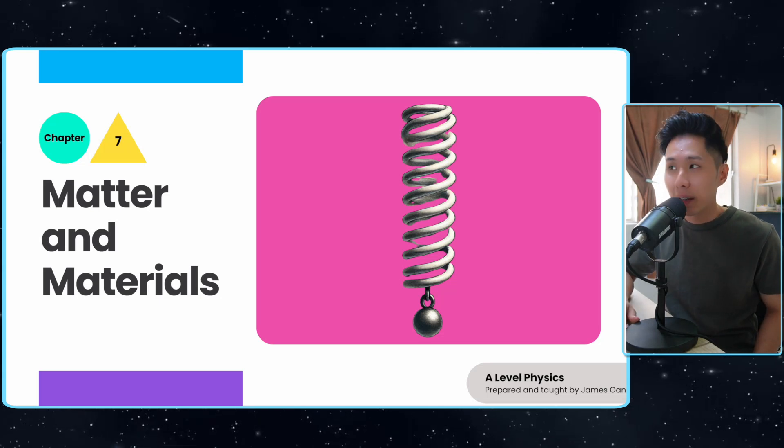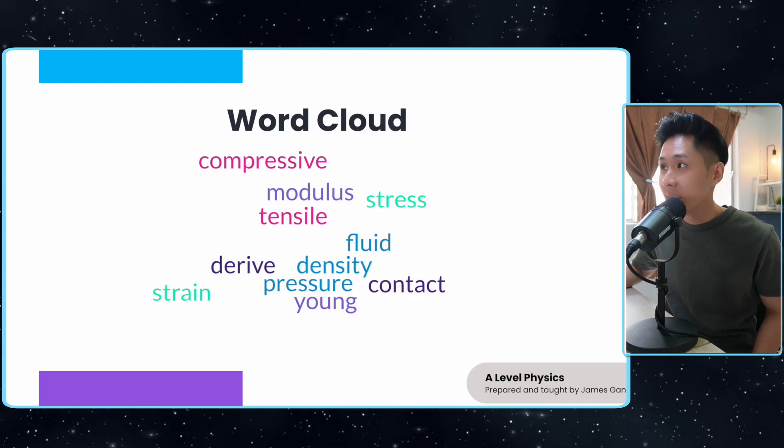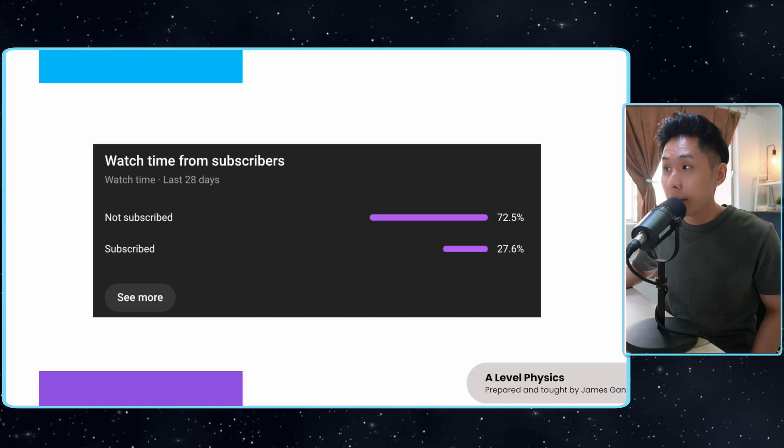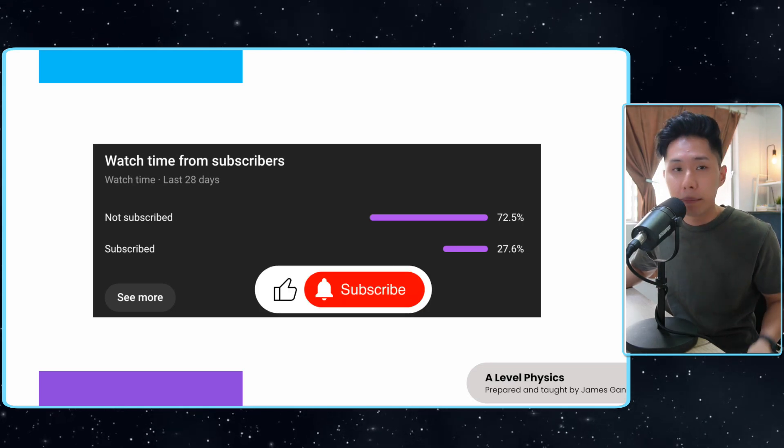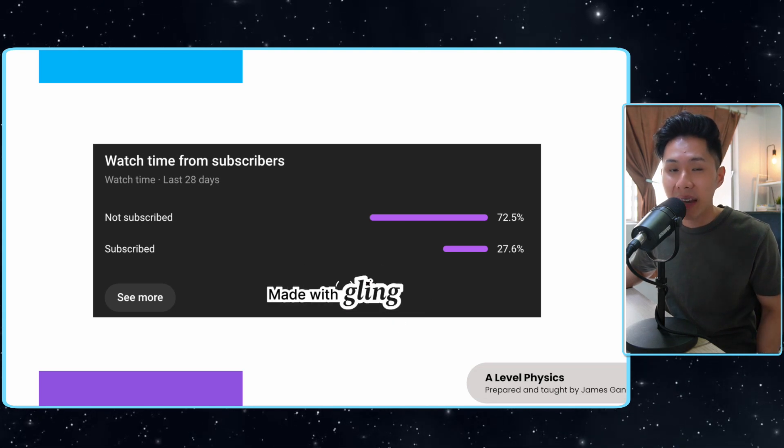Hello everyone, welcome back to this channel. Today we're going to look into A-level physics chapter 7, matter and materials. This is the word cloud of the chapter, which includes the terms that you will learn throughout the video. If you like the video, please subscribe so that we can bring this channel to more people. That will be the only favor I ask from you. Thank you.